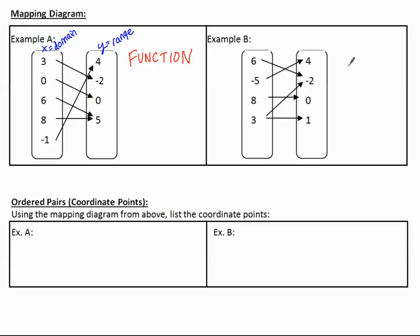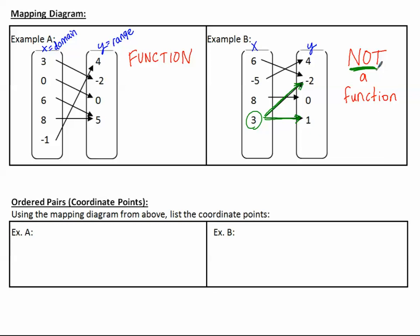In example B, this one is not a function. Six goes only to negative two, negative five goes only to four, eight goes only to zero — but three goes to negative two and also to one. Three goes to two different places, so because three goes to two different places, this is not a function. An x value can't go to more than one place — this three goes to two different y values instead of exactly one.